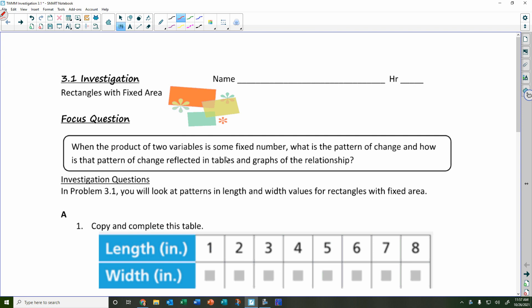So it says when a product of two variables is some fixed number. When you see the word product, okay, that means the answer to multiplication. The answer is what you get when you multiply two numbers together. So 3 times 4, the product is 12. Does that make sense? That's what the word product means.